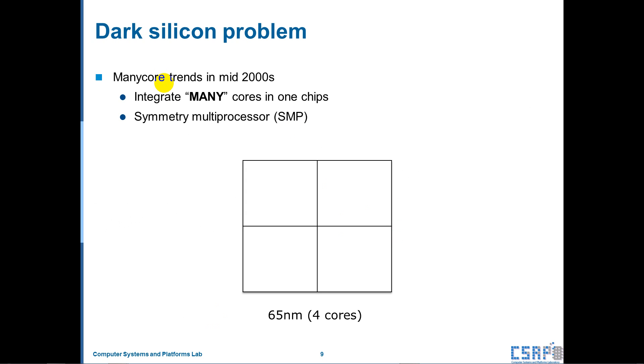In mid-2000s, the multi-core development trend is like that. And everyone just integrates many cores in one chip. For example, the symmetric multiprocessor. For example, if we want to make a 4-core processor in 65nm process, we think that we can make 16 cores in 32nm process, because of Moore's law. But actually, if we consider the thermal design power and performance, we cannot make it.